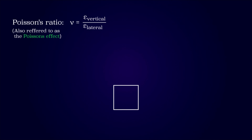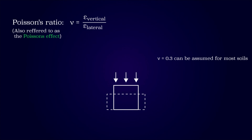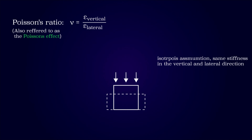When soil is compressed vertically, it experiences lateral deformations as well due to Poisson's effect. For most soils, a Poisson's ratio of 0.3 can be assumed. Since the deformations are less in the lateral direction, the stress increase must be lower than for the vertical direction, if isotropic properties are assumed. This stress redistribution is due to frictional resistance inside the soil.